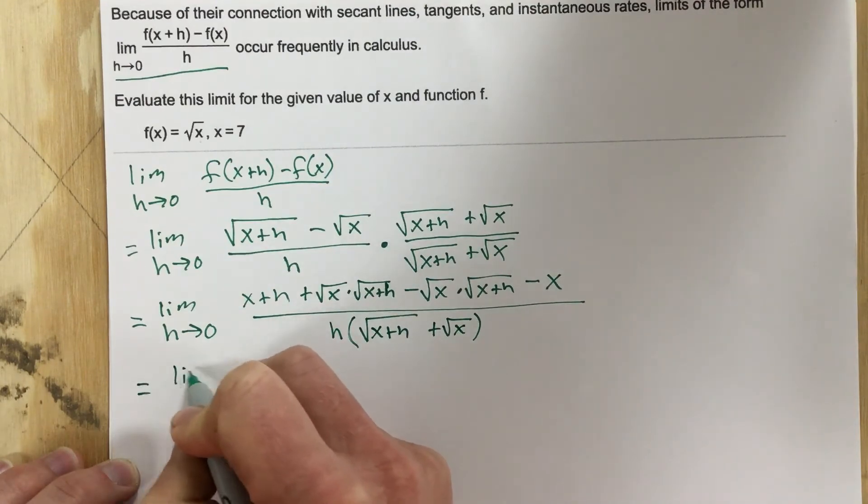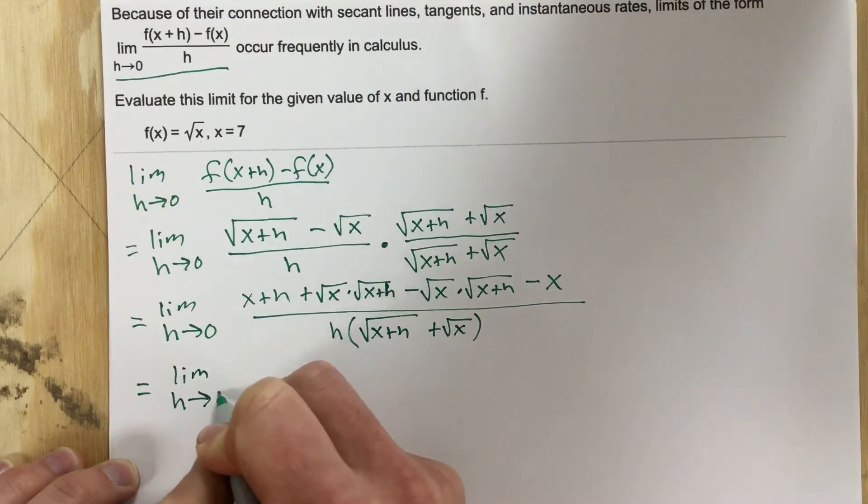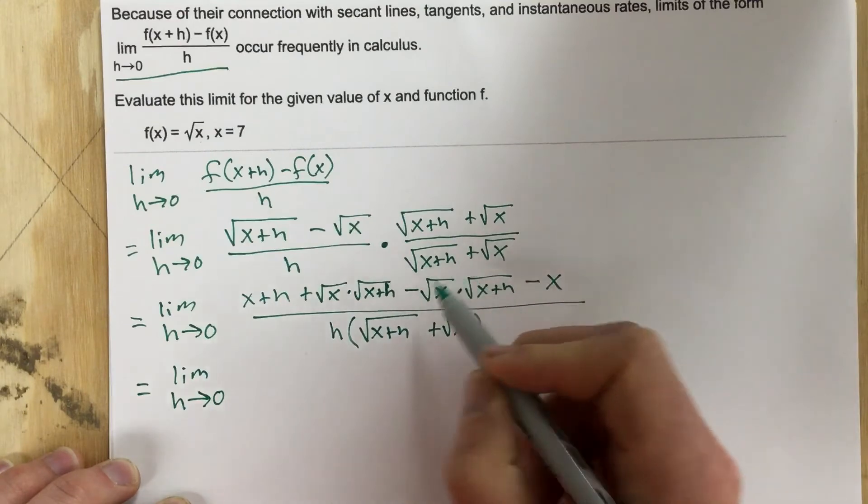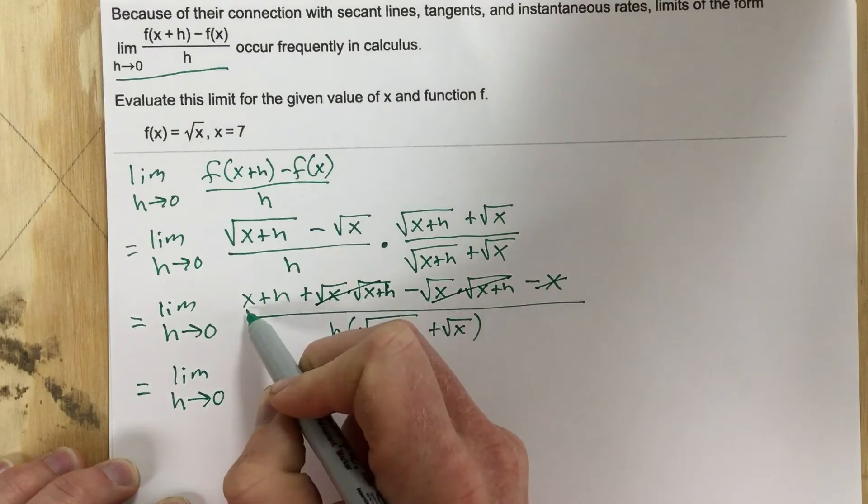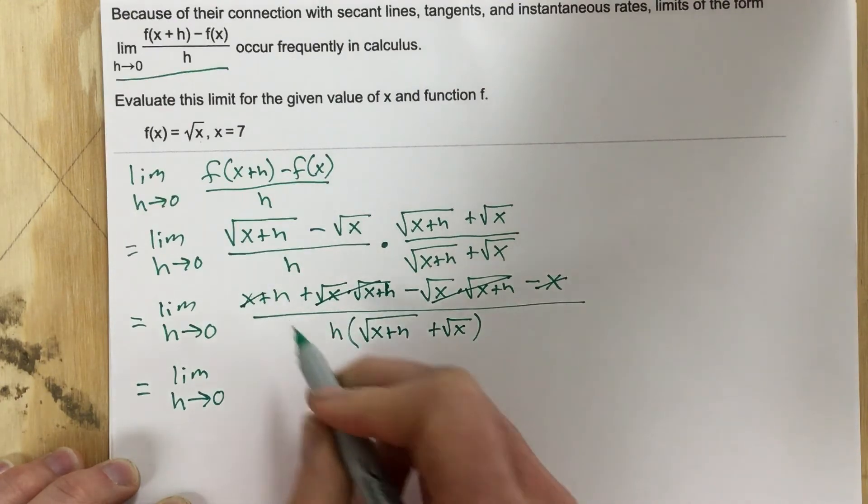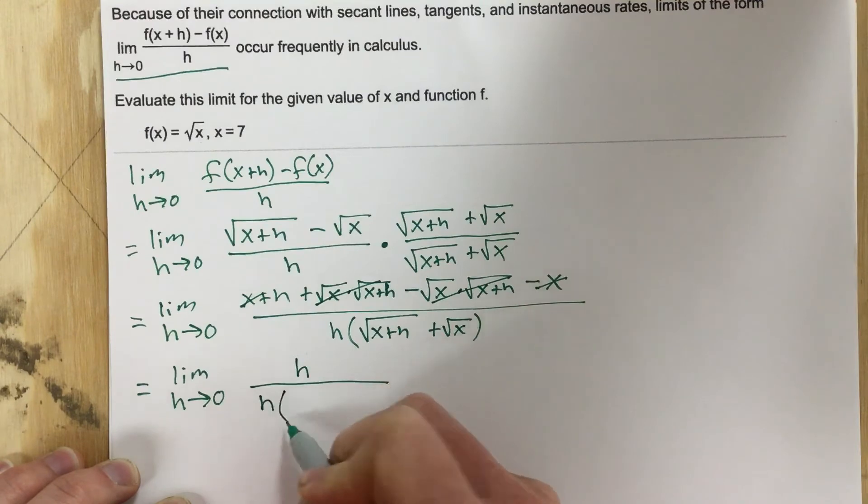That's going to give you a limit as h approaches 0, and you can start canceling some stuff. This cancels with this. The negative x cancels with the x. And we're left with h over h root x plus h plus root x.